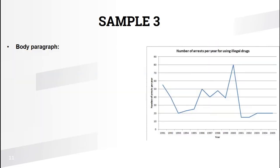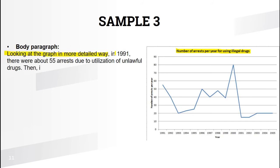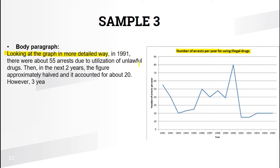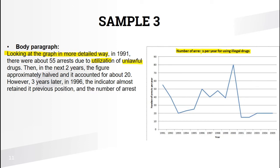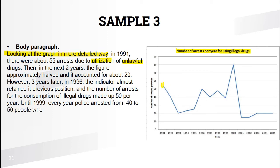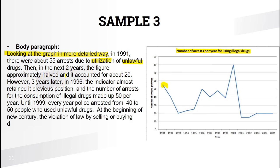Let's analyze our third example: the number of arrests per year for using illegal drugs. Looking at the paragraph in more detail — you can write this phrase instead as well. In 1991, there were about 55 arrests due to the utilization of unlawful drugs — 'utilization' means 'using' and 'unlawful' means 'illegal.' Then in the next two years, the figure approximately halved, meaning it became two times less, to about 20.